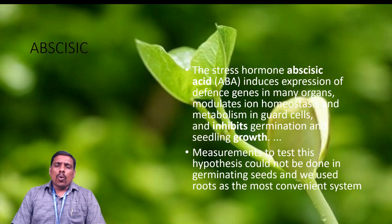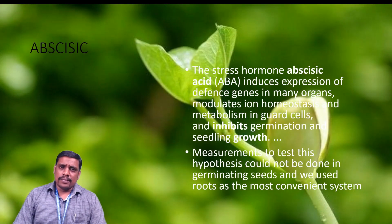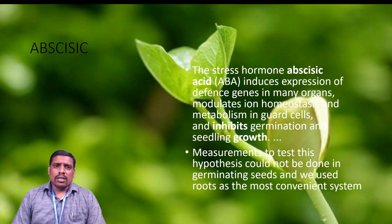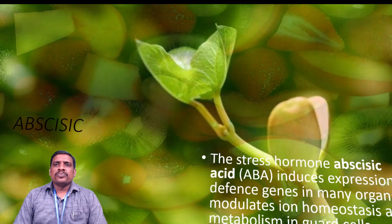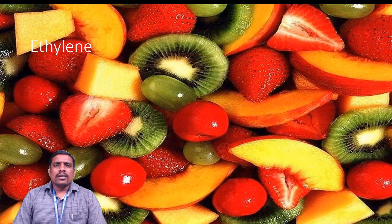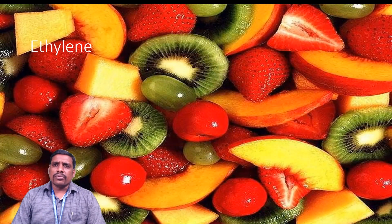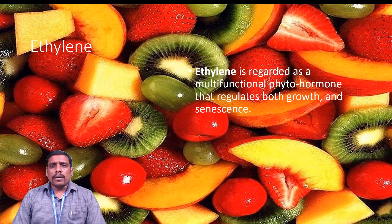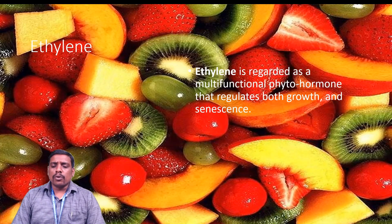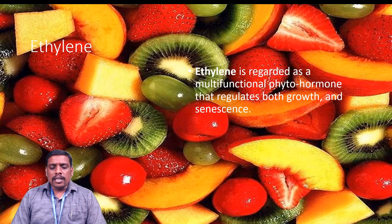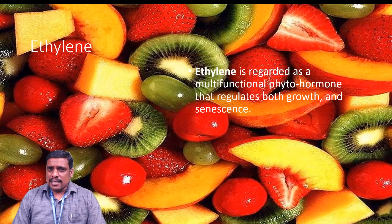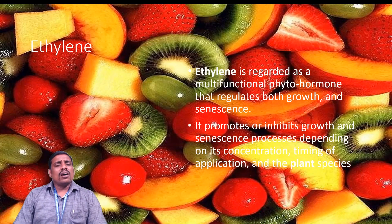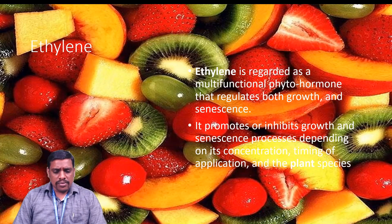Now, what are the effects of one more plant hormone, that is ethylene? What are the functions of ethylene and what is its role in plant growth and development? Let us find it. Ethylene is a plant hormone that plays an important role with multifunctional phytohormonal functions that regulate both growth and senescence.